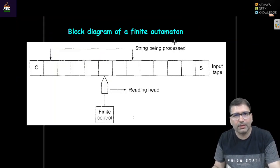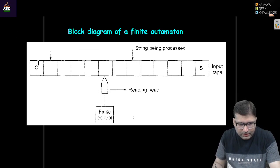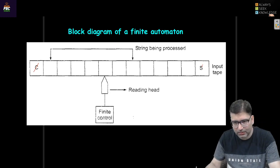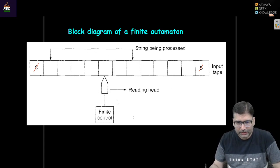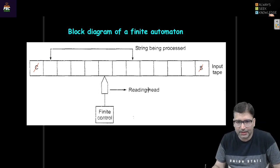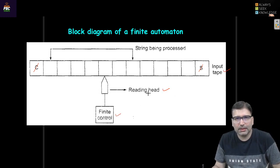Now let's look at the block diagram of a finite state automata. There are three basic components: finite control, reading head, and input tape. These three are the basic components of every automata.